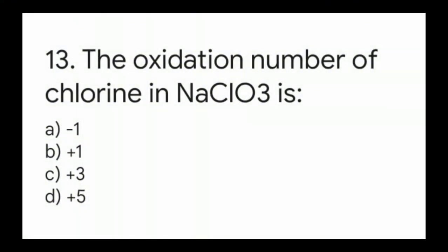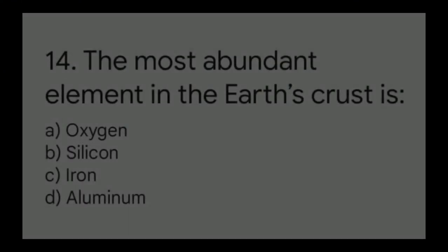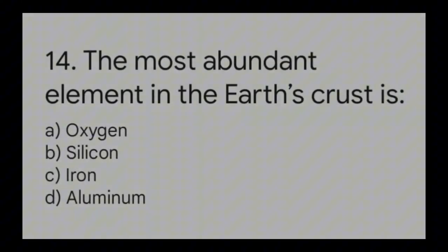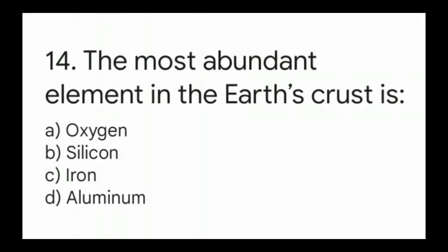Question number thirteen: what is the oxidation number of chlorine in NaClO3? The right answer is option D, plus 5. Question number fourteen: which is the most abundant element in the earth's crust? The right answer is option A, oxygen.